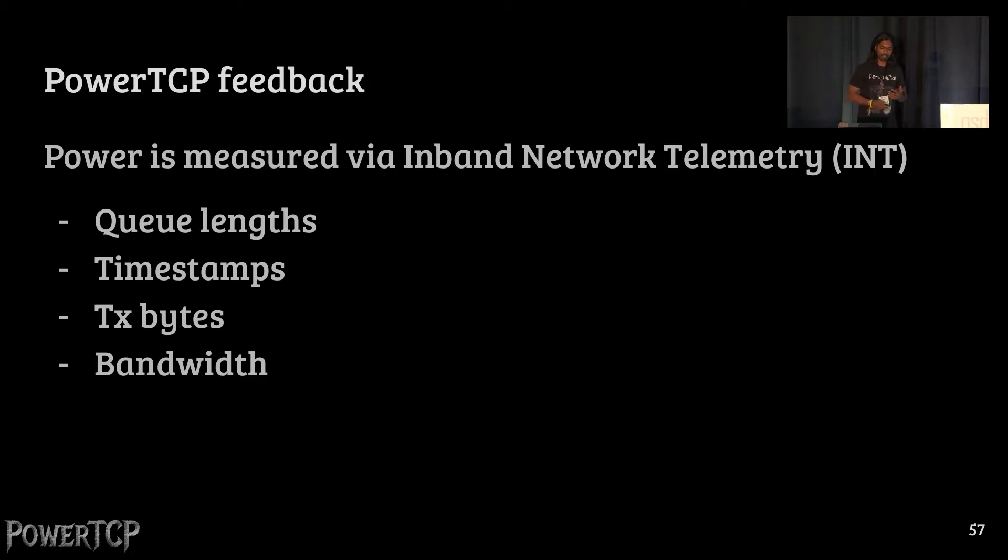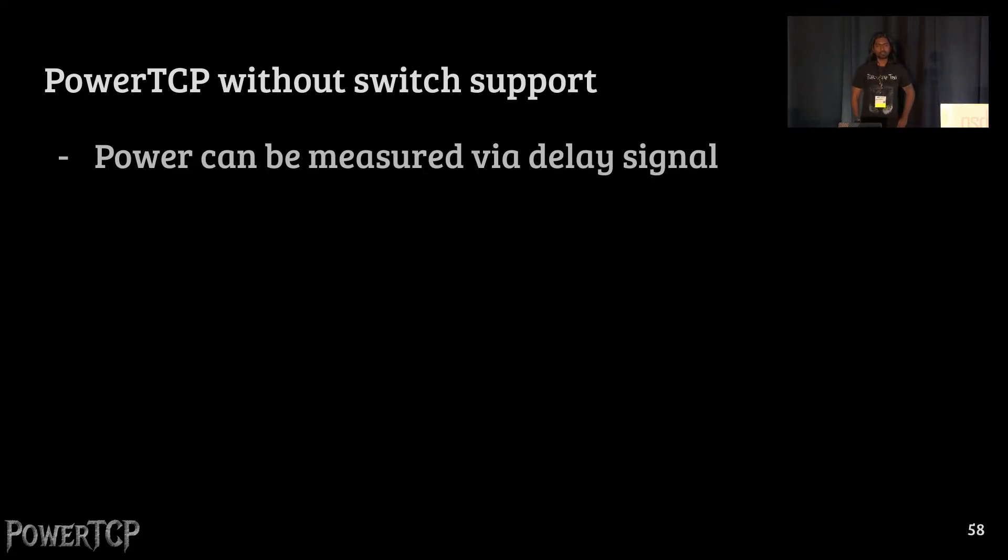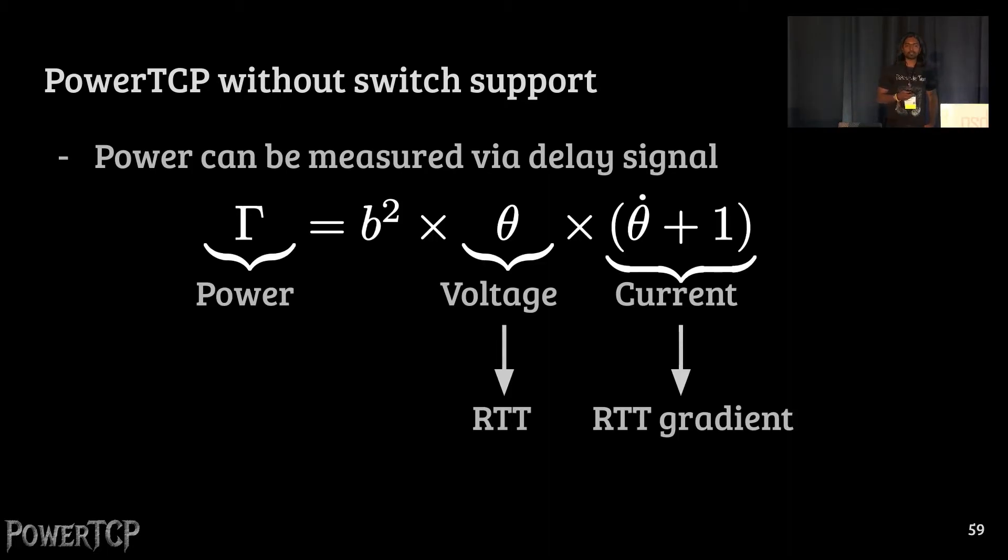Keep in mind that in-network telemetry is an additional support that is required from the switches. We also propose an approximated version, which only requires delay signal. The key idea here is that power can indeed be expressed as a function of RTT and RTT gradient. Of course, the approximation only holds under certain assumptions. More details can be found in our paper.